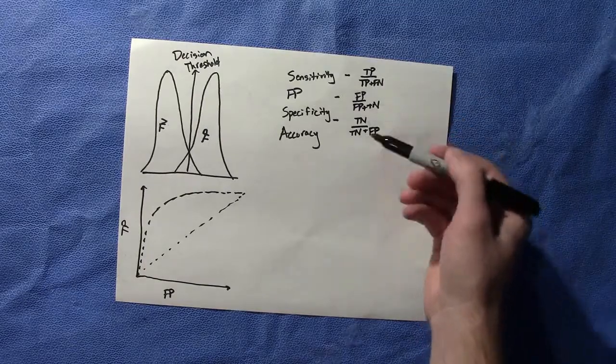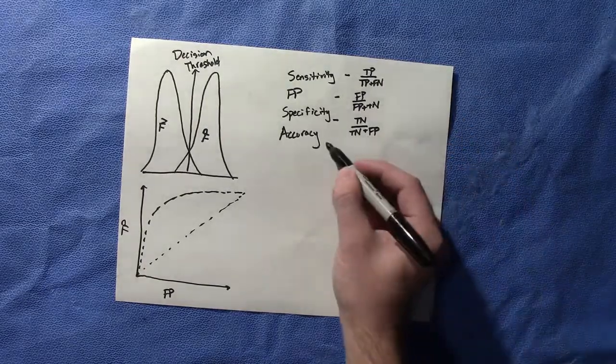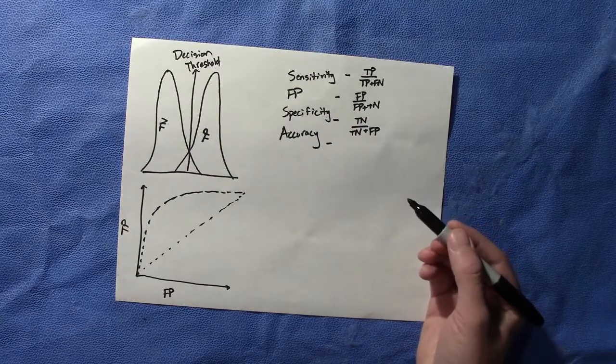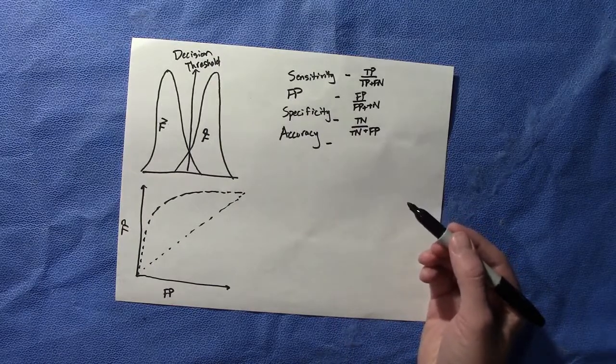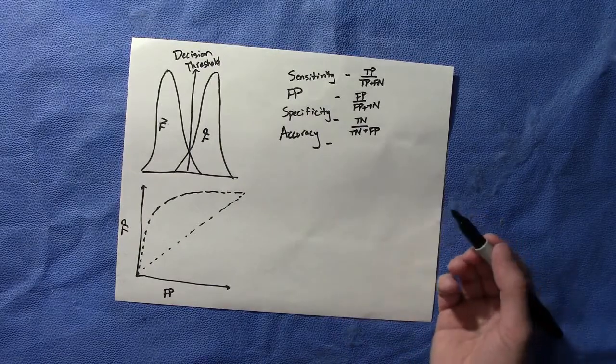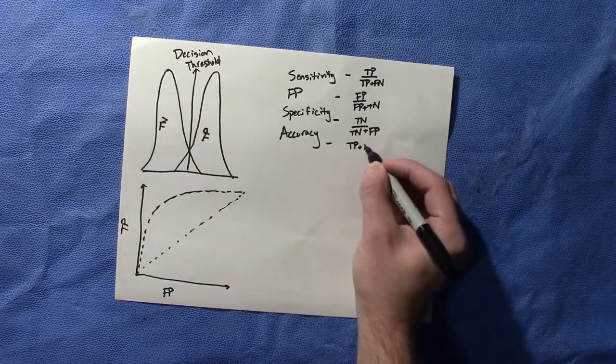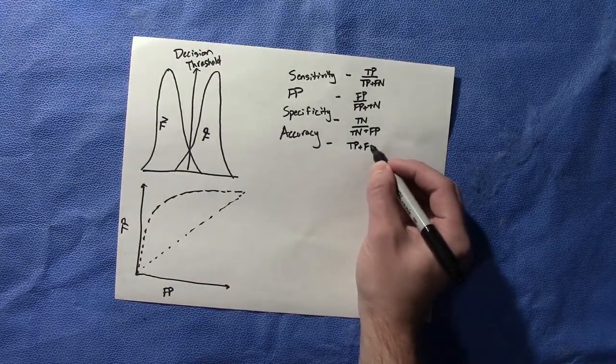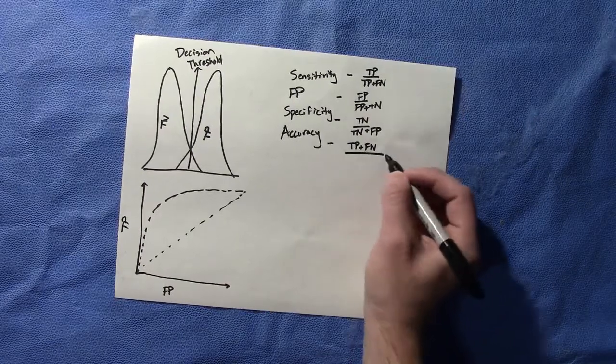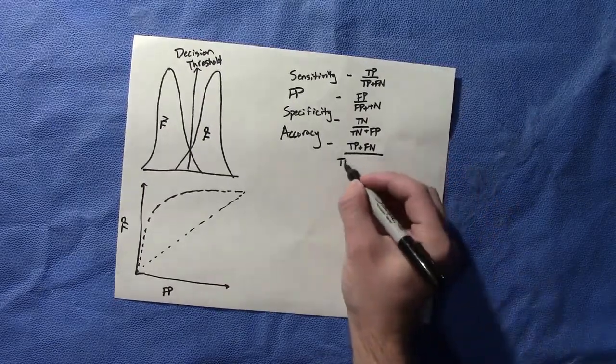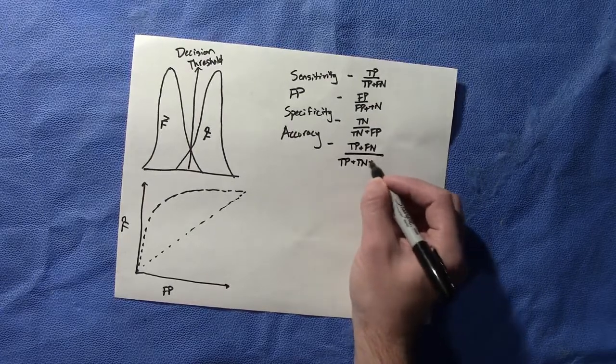So the accuracy is just calling something what it truly is, and this all you have to remember is that true positive and false negative need to go on top and then we have everything on the bottom. So all of our options there.